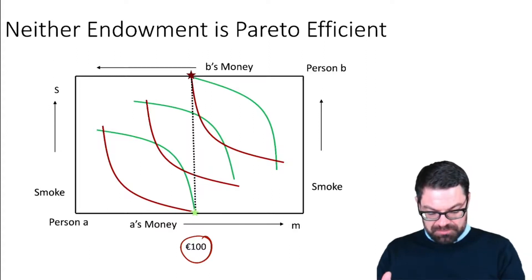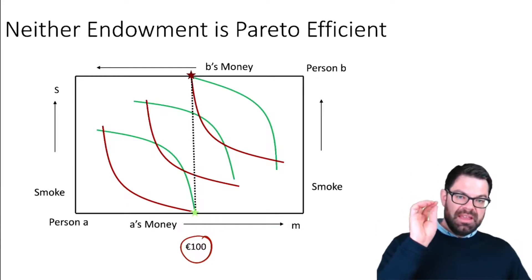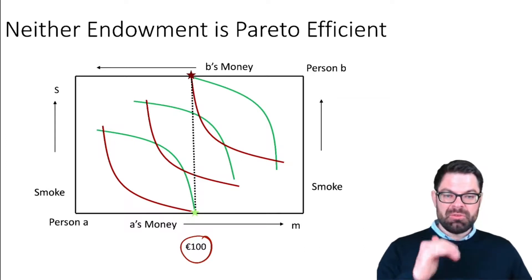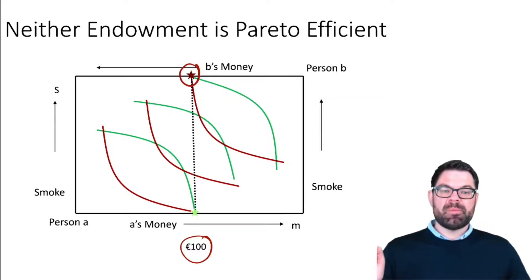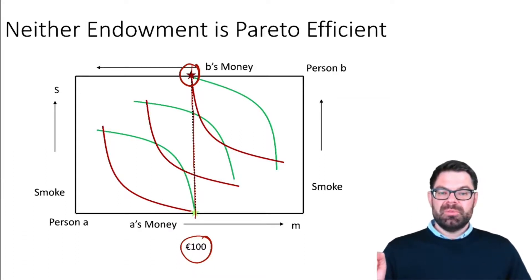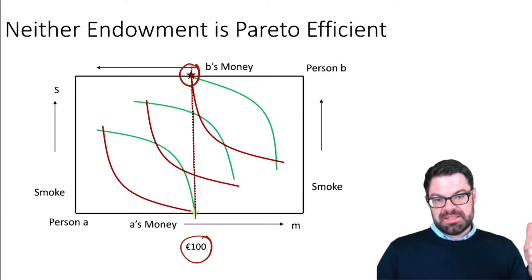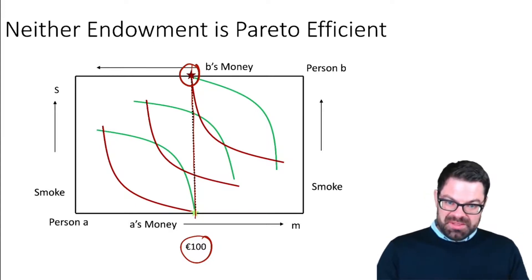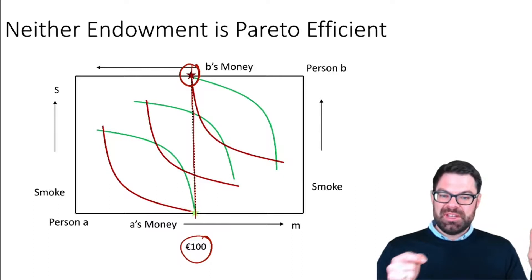The red star indicates the endowment point if person A owns the property rights to smoke — the right to simply smoke. In that case, person A smokes the maximum amount they can and also spends their €100. So these are the two endowment points under those different property rights, and property rights matter a lot for what the endowment points are and what the potential solutions might be.